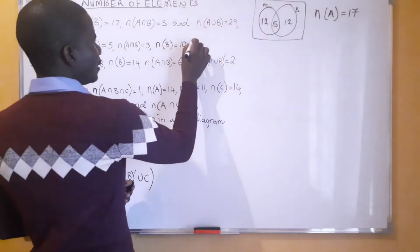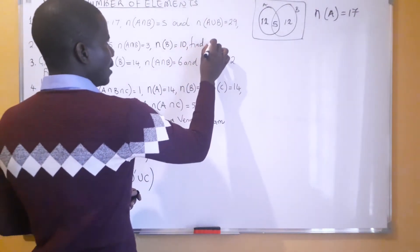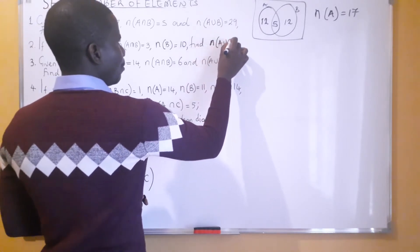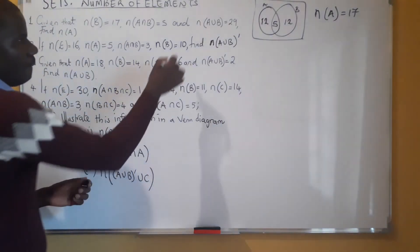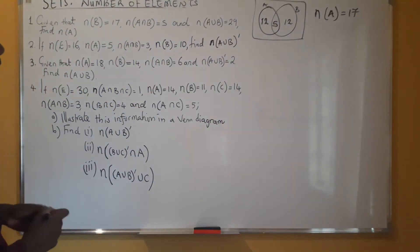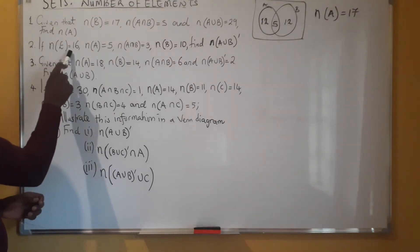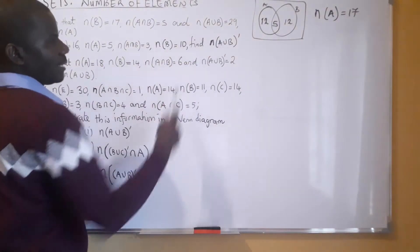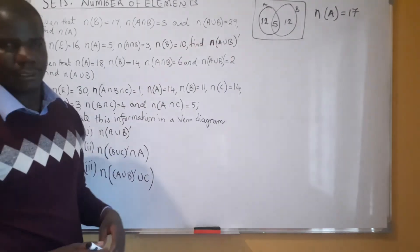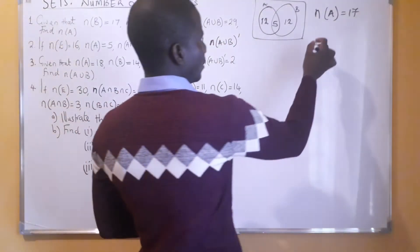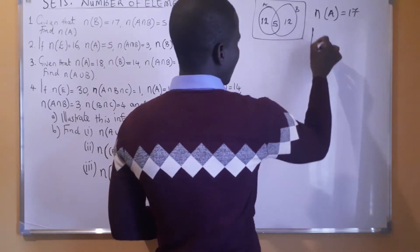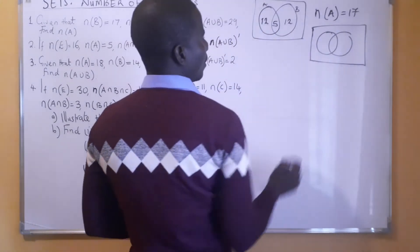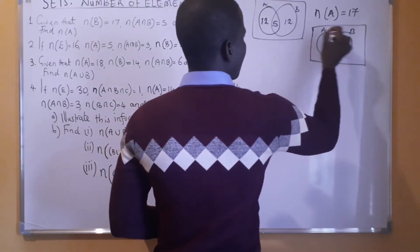The second one: we are supposed to find the number of elements in A union B complement. The number of elements in the universal set is 16, in A we have 5, in the intersection we have 3, in B we have 10. Then find the number of elements that are outside both sets. So I can draw the same Venn diagram here with our A and our B and the universal set.